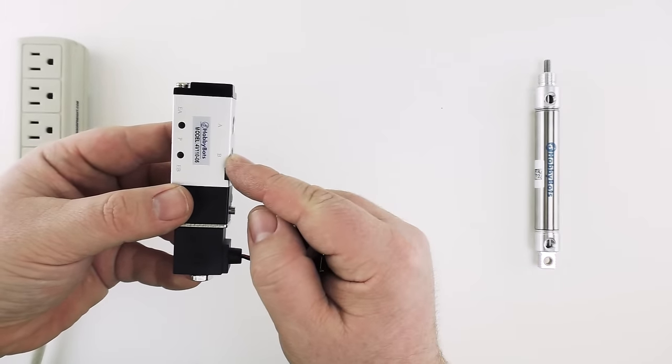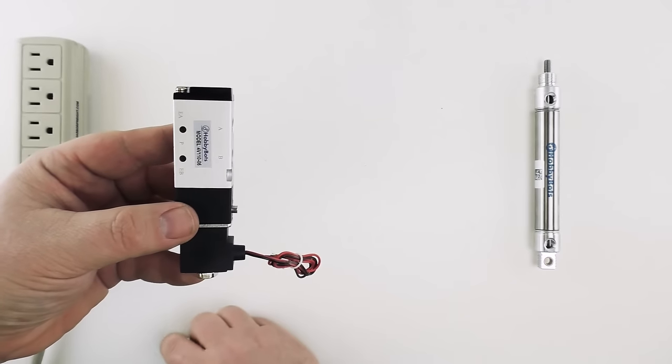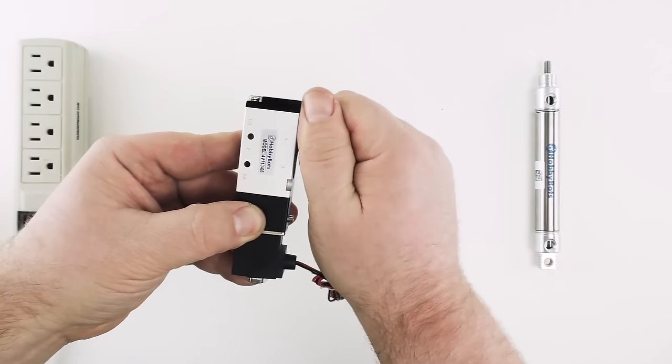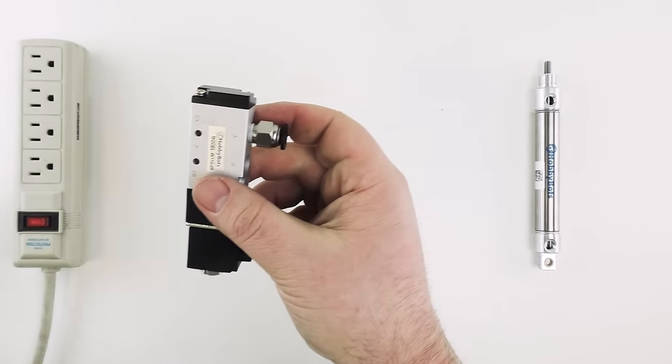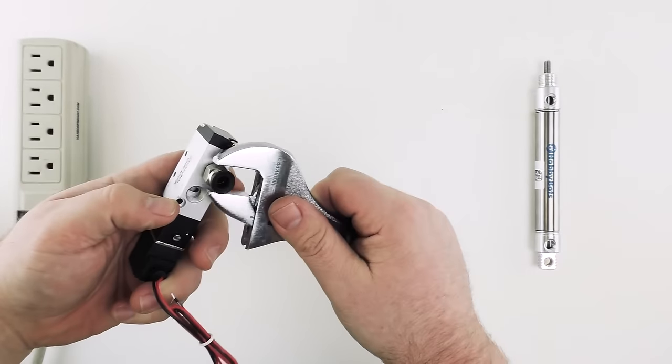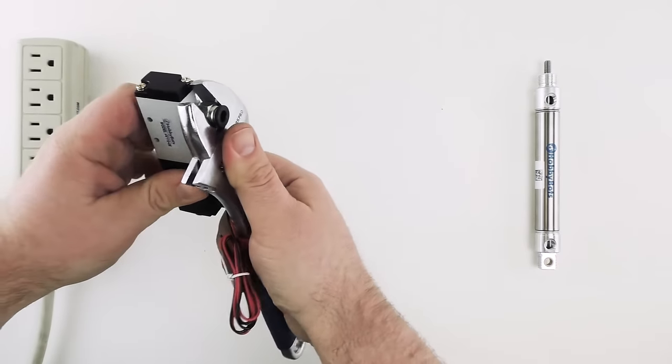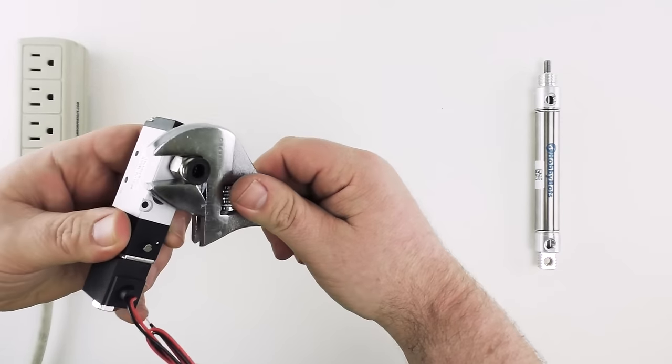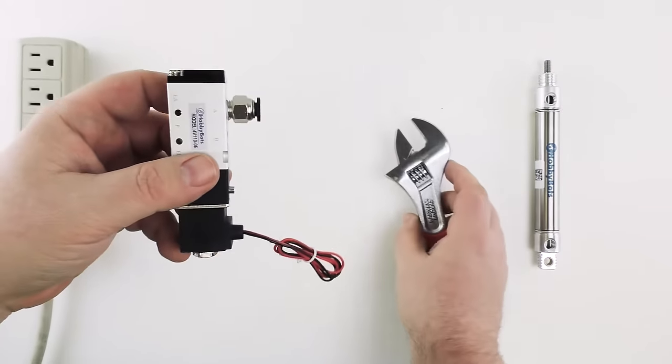For this solenoid we're going to need three fittings. One for each of the two air outputs and one for the air input. We're just going to go ahead and tighten one in by hand first and then come in with an adjustable wrench and make sure that it is nice and snug. We don't want any air leaking out so we want to make sure that it's nice and tight.